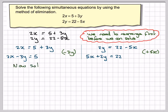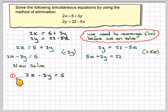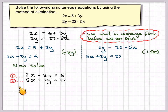Now we can solve: 2x minus 3y is equal to 5 — we'll call that equation 1. And 5x plus 2y is equal to 22 — we'll call that equation 2.